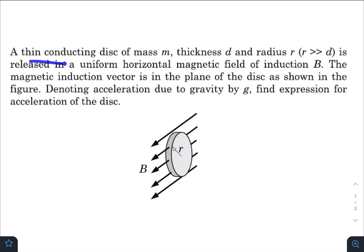And in today's question, we have a thin conducting disk of mass m, thickness d and radius r, where r is very much greater than small d, is released in a uniform horizontal magnetic field of induction B.